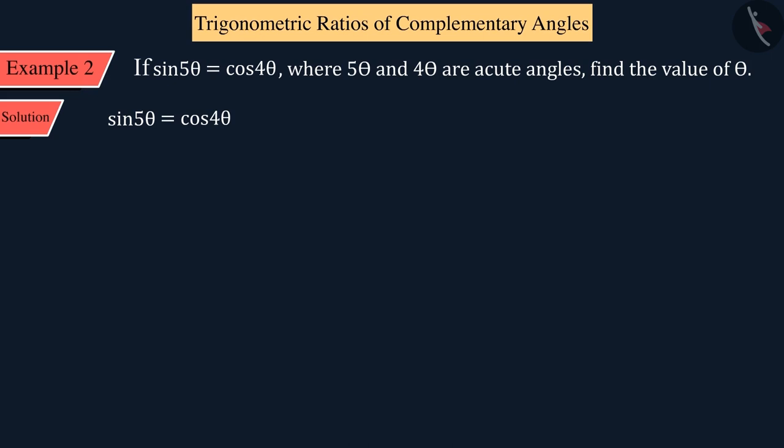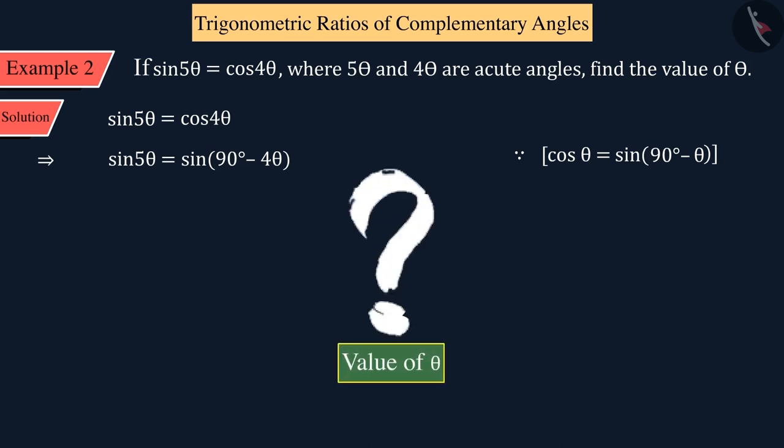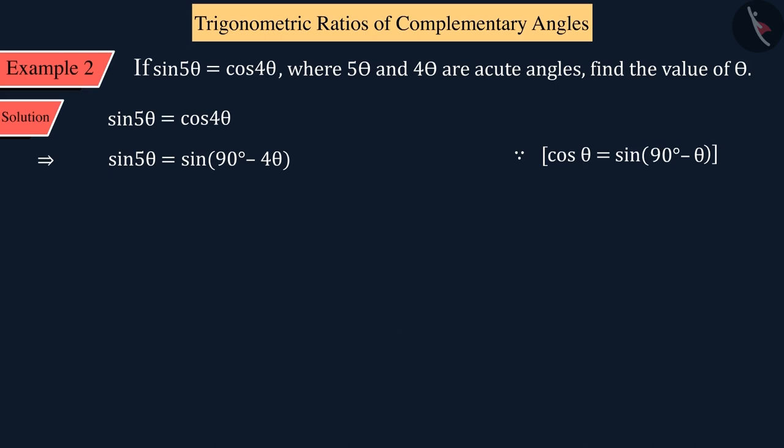So, to solve this, here we will change the cos on the right side to sin. From this equation, we can see that the value of sin 5θ is equal to sin(90° - 4θ). Since we have to find the value of θ, we compare the two sides and solve.